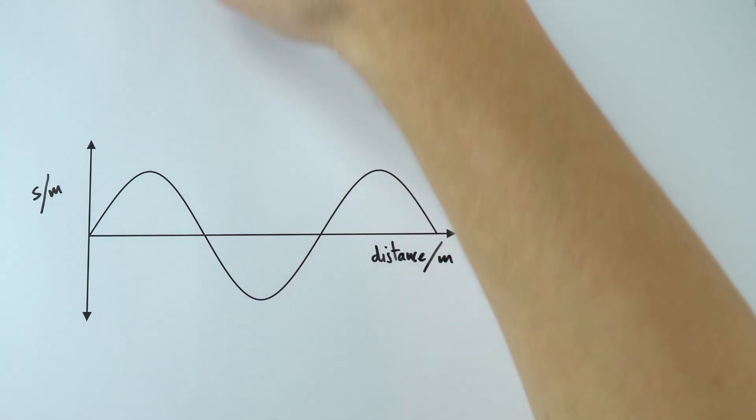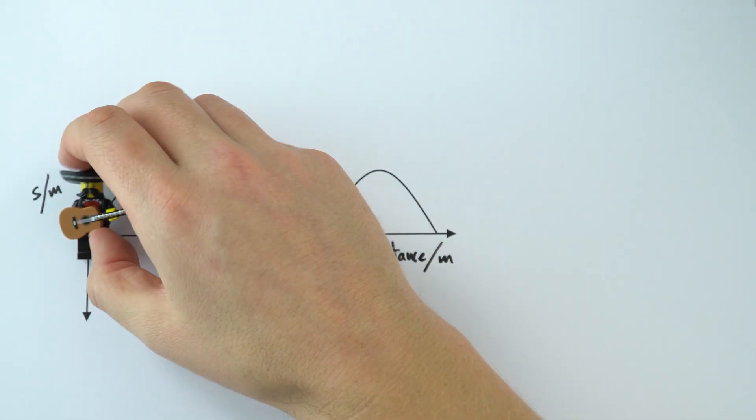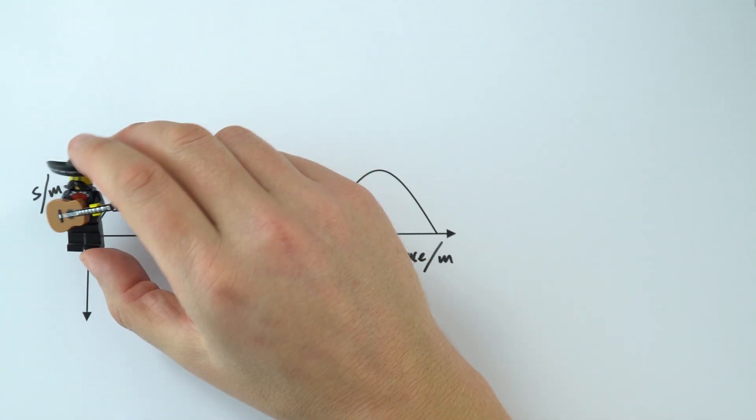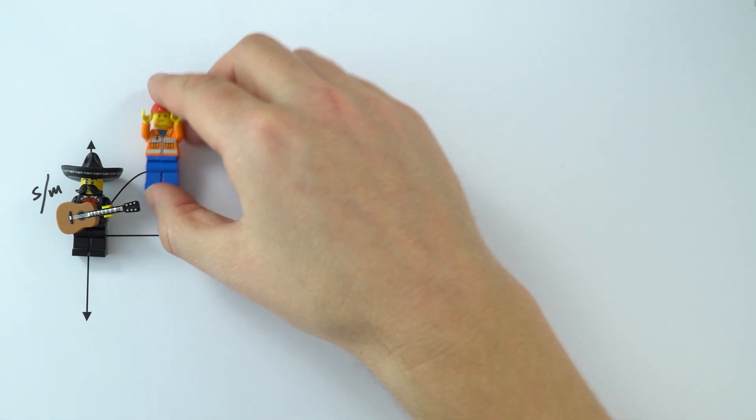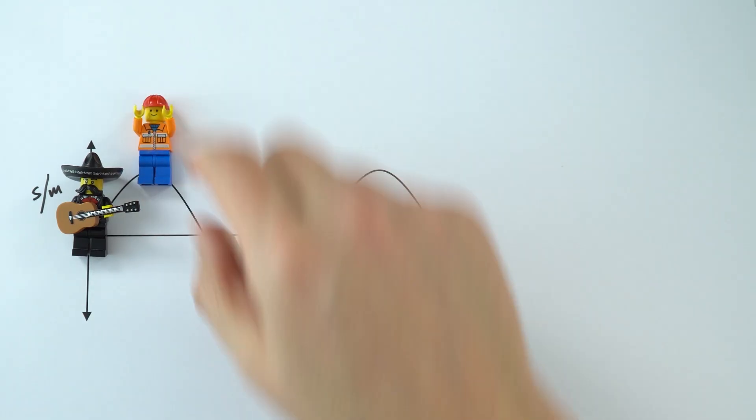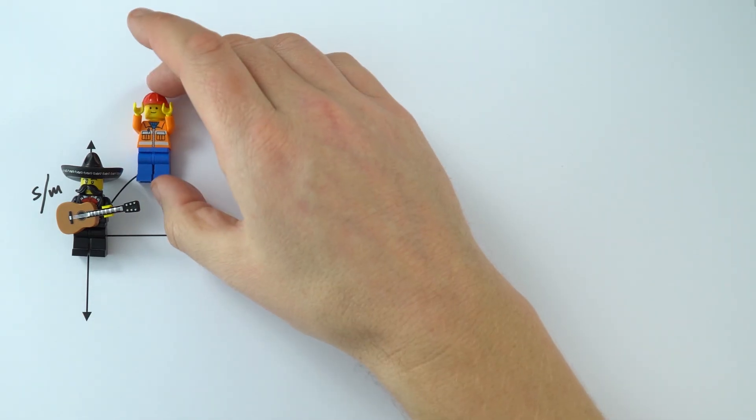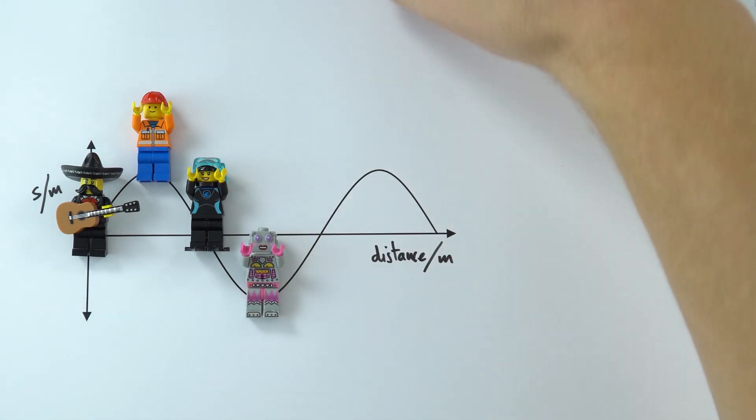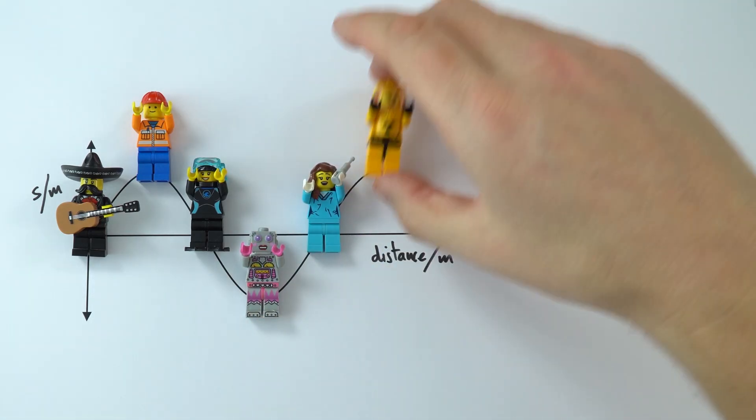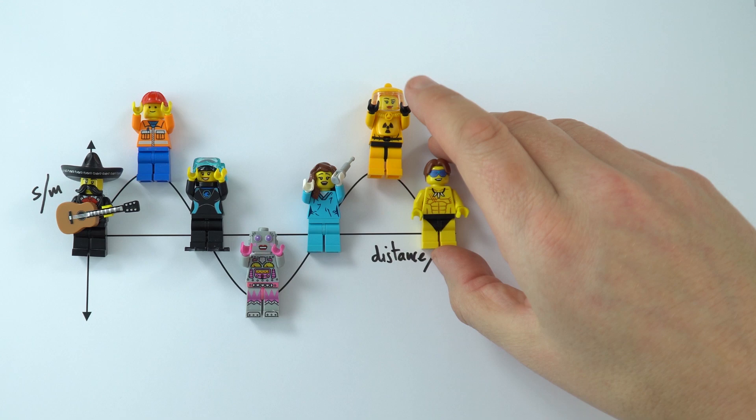Effectively what we can think about is if we were to freeze time, one particle or figure on the wave is in the middle position. Maybe the person next to them is at the maximum height, so this is their maximum displacement up here. And then as we keep looking at these people going all the way along that Mexican wave, what we can see is that the people are spread out like this.